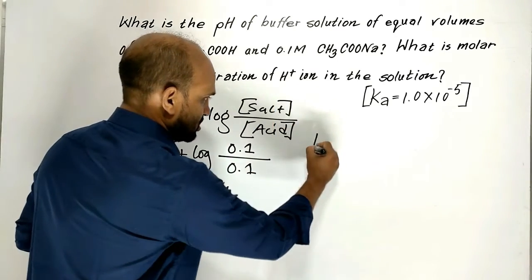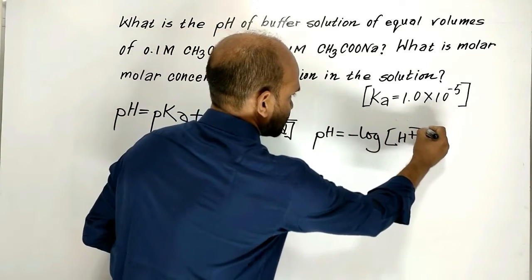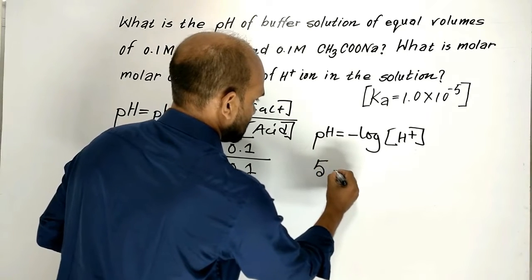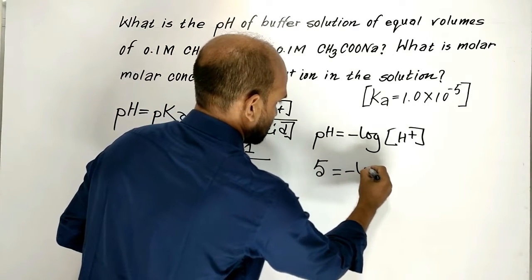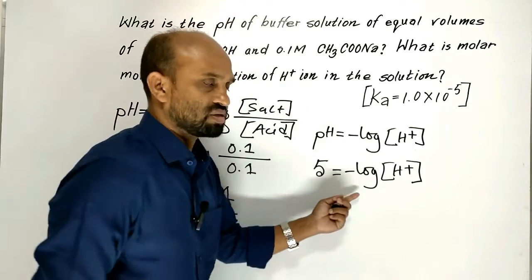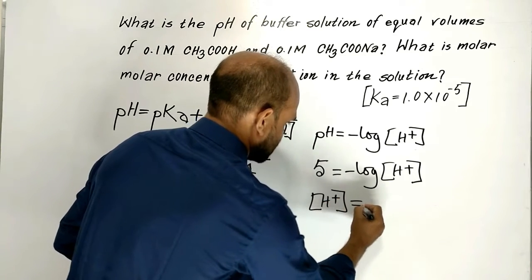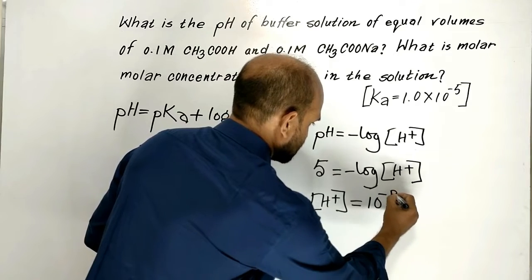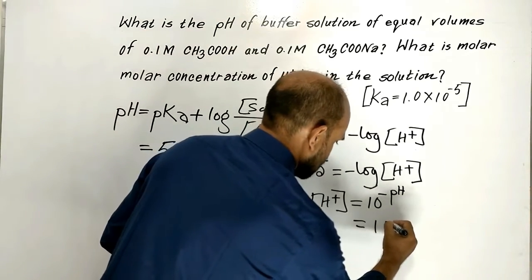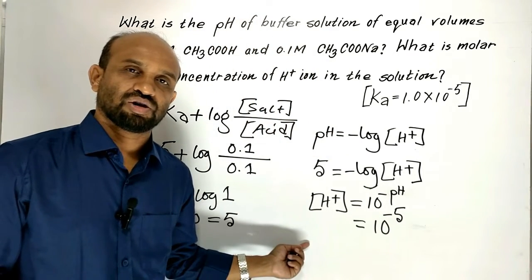For the second question, what is the molar concentration of hydrogen ion? We use the equation: pH = −log[H⁺]. Since pH = 5, we can write [H⁺] = 10^(−pH) = 10⁻⁵. So the molar concentration of hydrogen ion is 10⁻⁵ mol per liter.